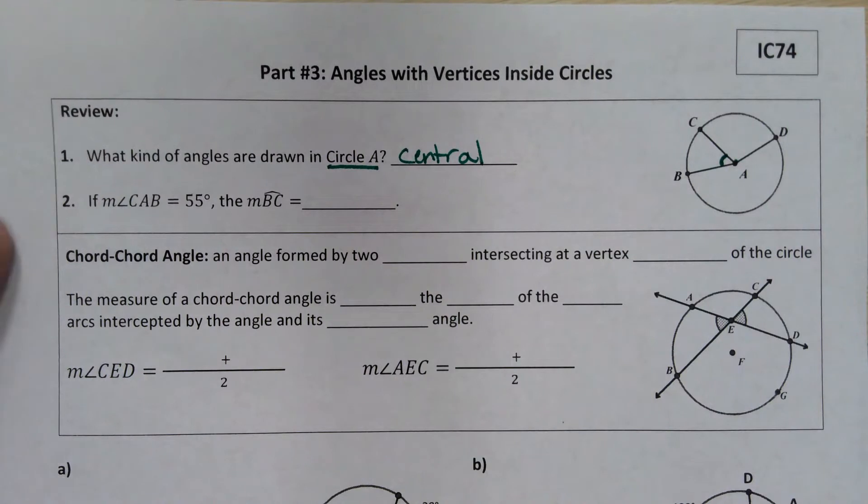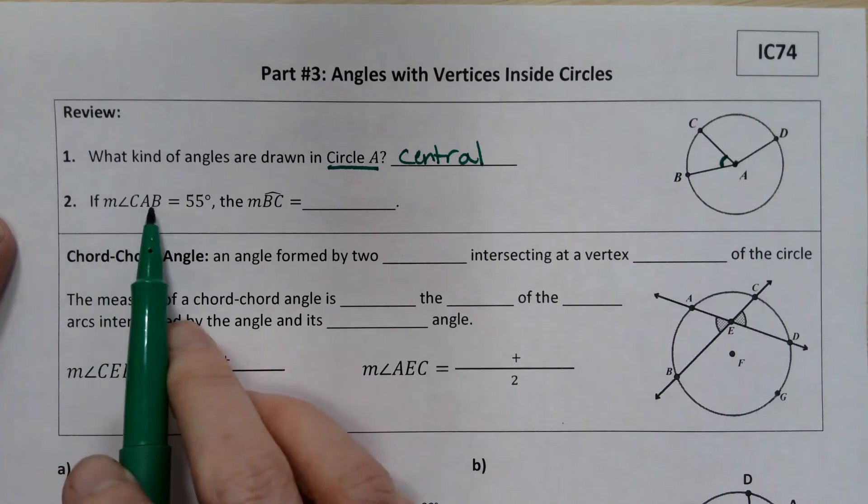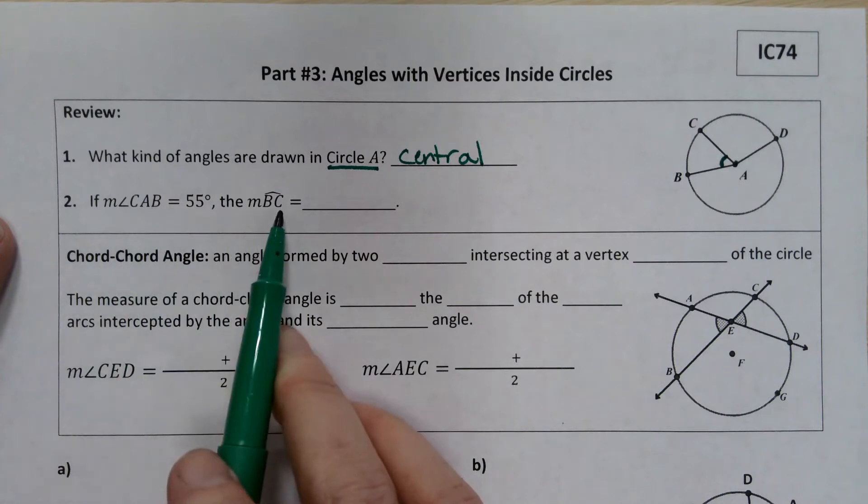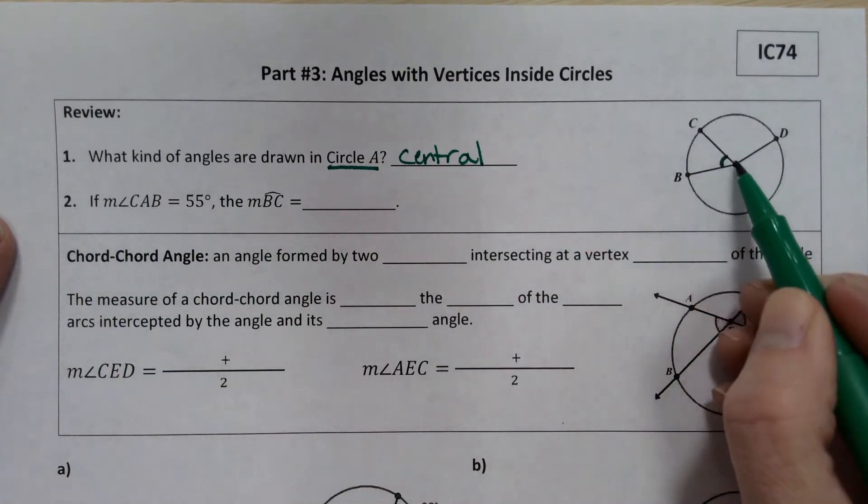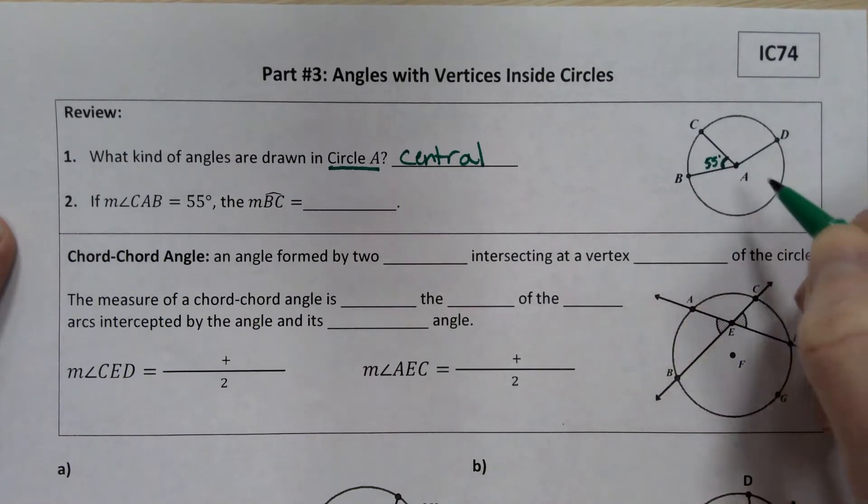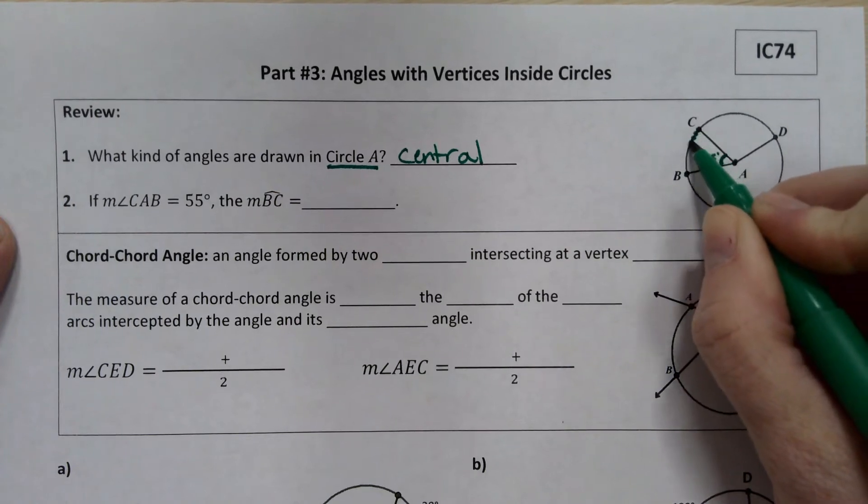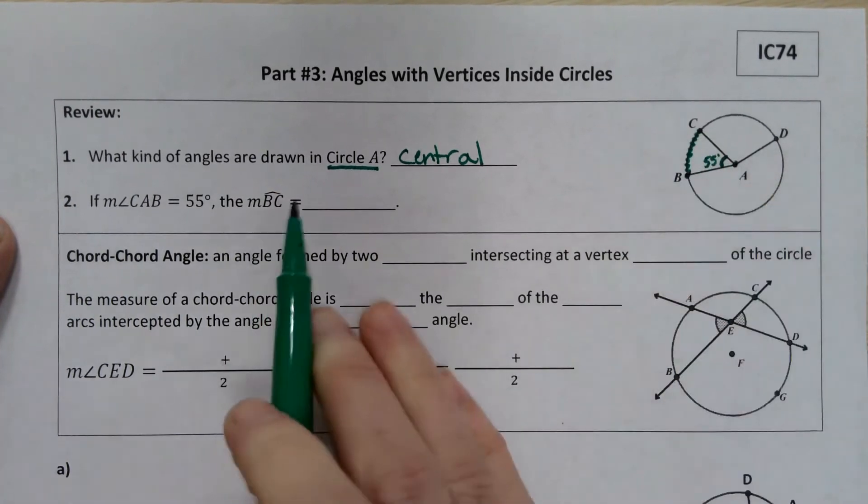So if we think back to finding the measure or the relationship between the central angle and its intercepted arc, if the measure of angle CAB is equal to 55 degrees, if we follow those radii out to where they intercept the circle, then our intercepted arc would be arc BC.